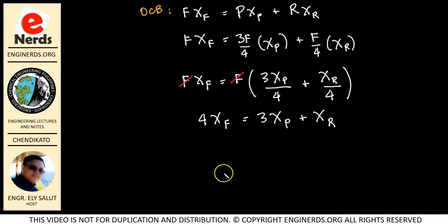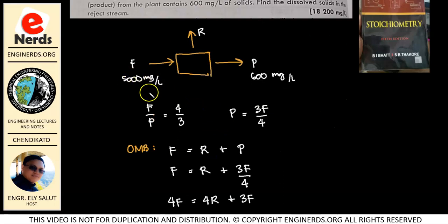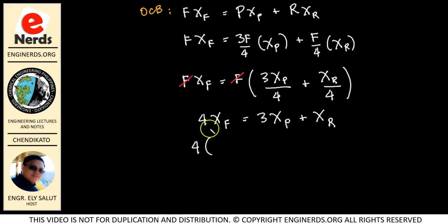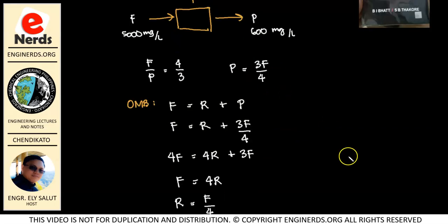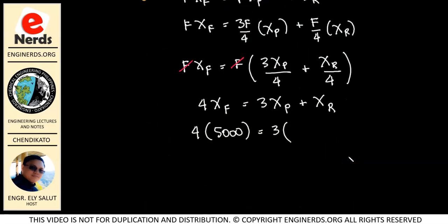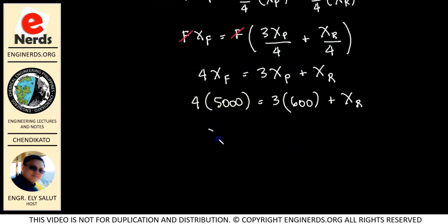So for our feed, we have 4 times our XF. We can get our dissolved solids in our feed which is 5,000 mg per liter. So we have 5,000 is equal to 3 times our XP, the dissolved solids in our product which is 600. Okay? So let me write 600 here. Then plus our XR. This is what we're looking for now. Okay? So we can isolate our XR.